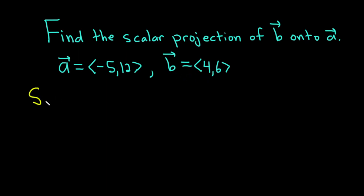Let's work through this solution. The scalar projection of B onto A, also known as the component of B along A, is equal to A dot B divided by the magnitude of A.